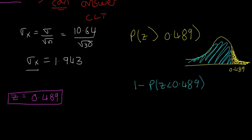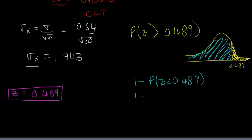We'll look up the standard normal table. If you look in your tables, you'll find that it's 1 minus 0.6879. So our answer is 0.3121.